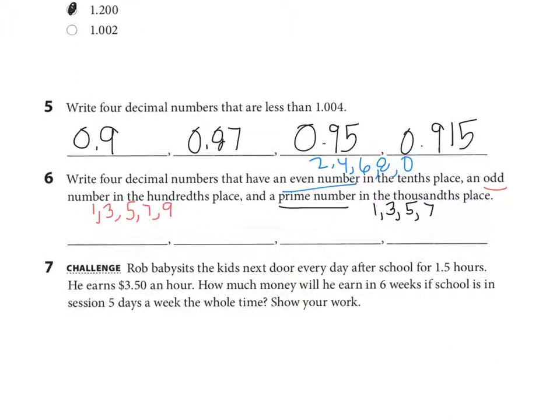So I'm writing four different numbers that have even number in the tenths, odd in the hundredths, prime in the thousandths. So it doesn't really matter which one I choose. Let's think 2, 1, 1. So what would that number look like? It would be 0.211 thousandths. The next decimal I'm going to make was 4, 3, 3. 0.433 thousandths. Now you can write any decimals that these rules apply to. I'm just writing down a few examples: 0.655 thousandths, 0.877 thousandths.